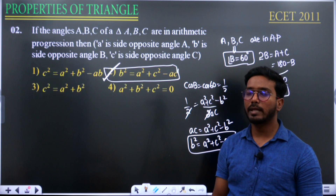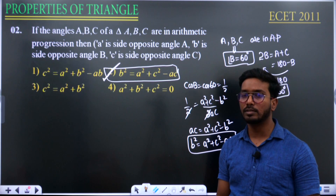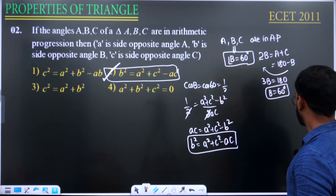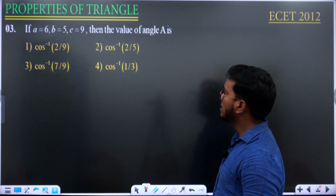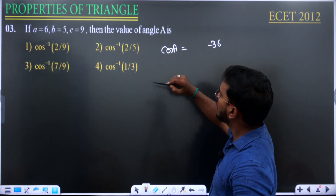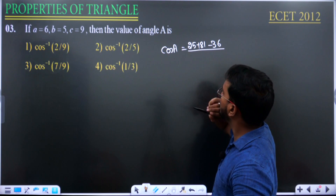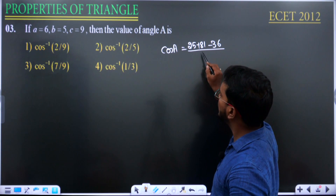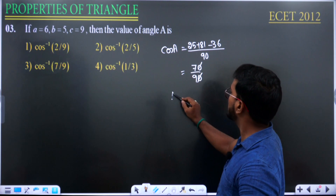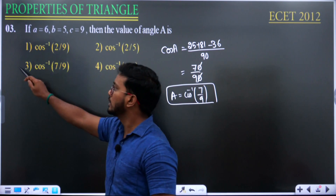The cosine rule has again been combined with the progression concept. Moving on to the next question asking for angle A: cos A = (b² + c² − a²) / 2bc = (25 + 81 − 36) / (2 × 5 × 9) = 70/90 = 7/9. Therefore A = cos⁻¹(7/9), which is option 3.